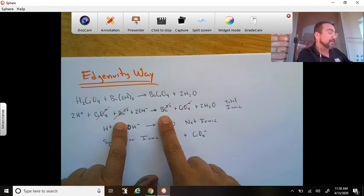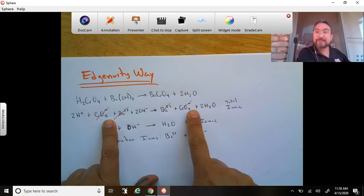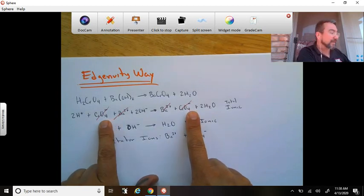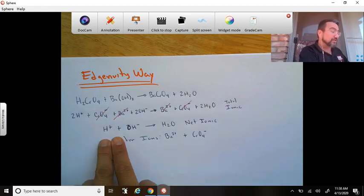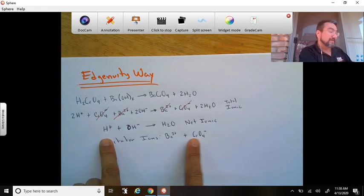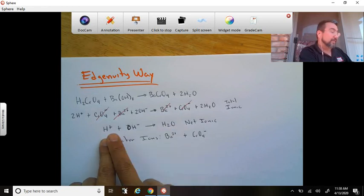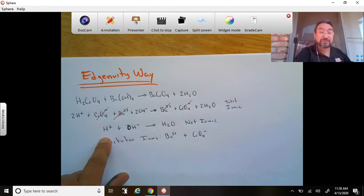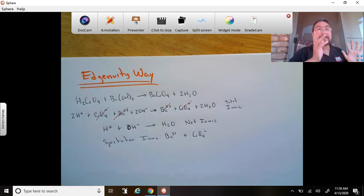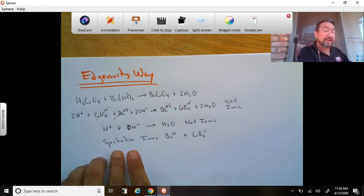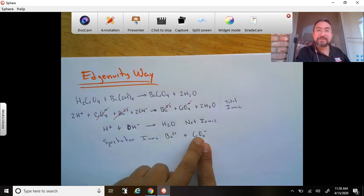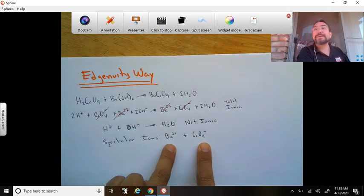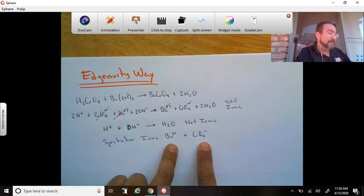And according to them, you can cancel the bariums and you can cancel the chromates. Again, those chromates are wrong because it's negative two, not negative one like they write. So their net ionic equation is just a neutralization reaction, the water being made from the hydrogen ion and the hydroxide ion. Just so you know, and in their universe there are spectator ions: the barium ion and the chromate ion, again with the wrong charge. They call those spectator ions.